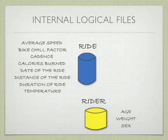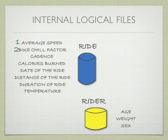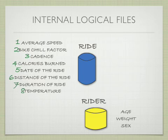There are two internal logical files: Ride and Rider. Ride has eight data elements — Average Speed, Bike Chill Factor, Cadence, Calories Burned, Date of the Ride, Distance of the Ride, Duration of the Ride, and Temperature. Rider has three data elements — Age, Weight, and Sex.